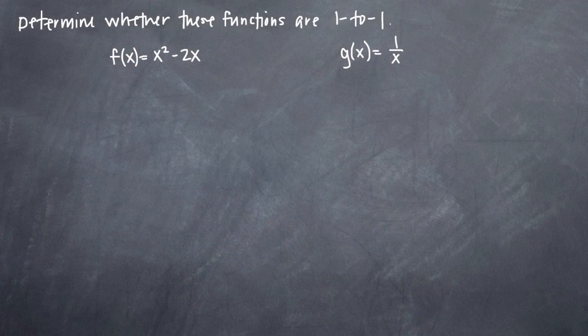In this particular problem, we've been asked to determine whether these two functions are one to one. Keep in mind that that's the same thing as asking whether or not these functions pass the horizontal line test. A function is called one to one and passes the horizontal line test if there's only one x output value for every y input value — so it's really just the opposite of the vertical line test.